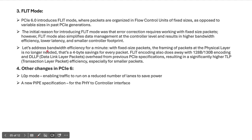In Gen 6 with 1b/1b encoding, you only transmit actual data itself — no need to append extra bits. In Gen 1 and Gen 2, for every 8 bits of data, extra bits were added; from Gen 3 onwards, 2 extra bits were added for every 128 bits. But in Gen 6, no extra bits are appended — it is 1b/1b encoding only.